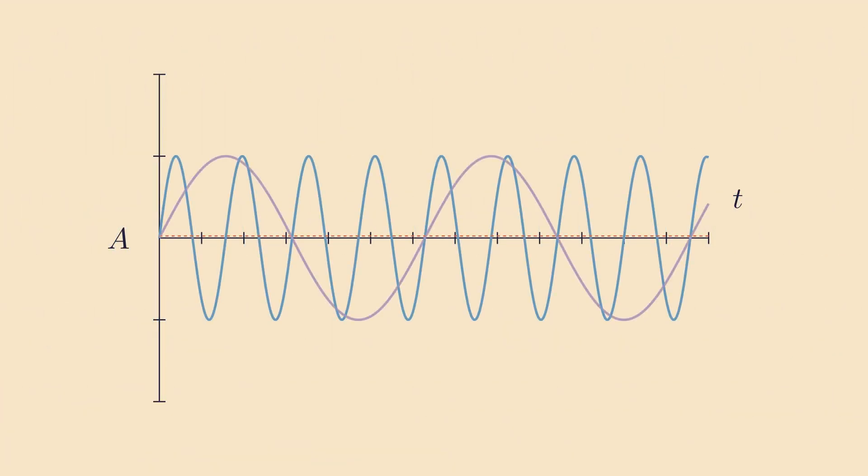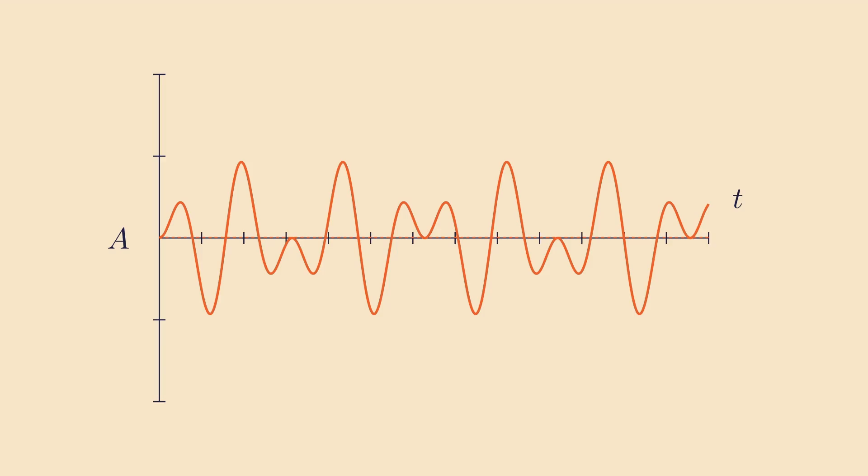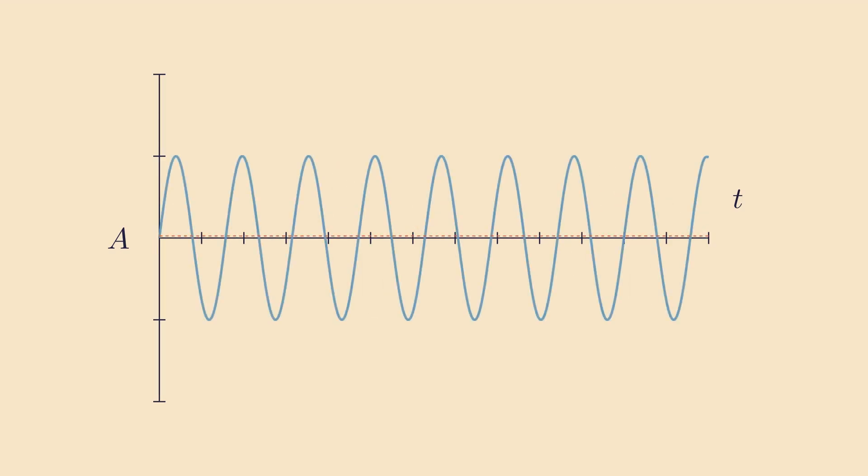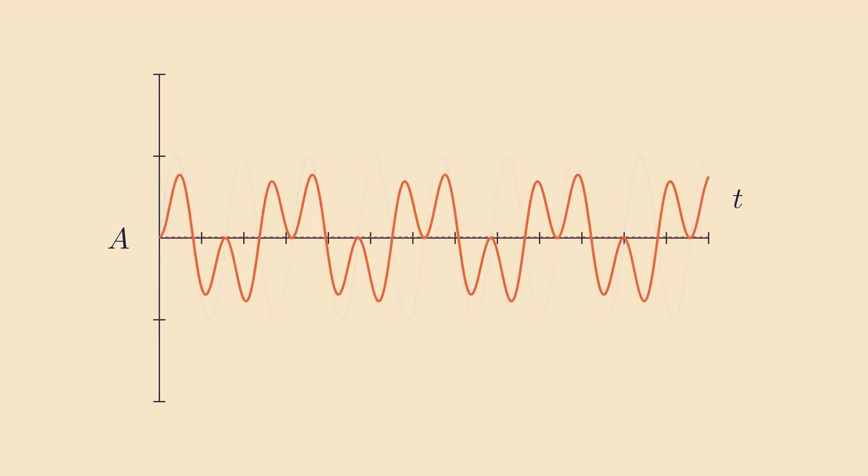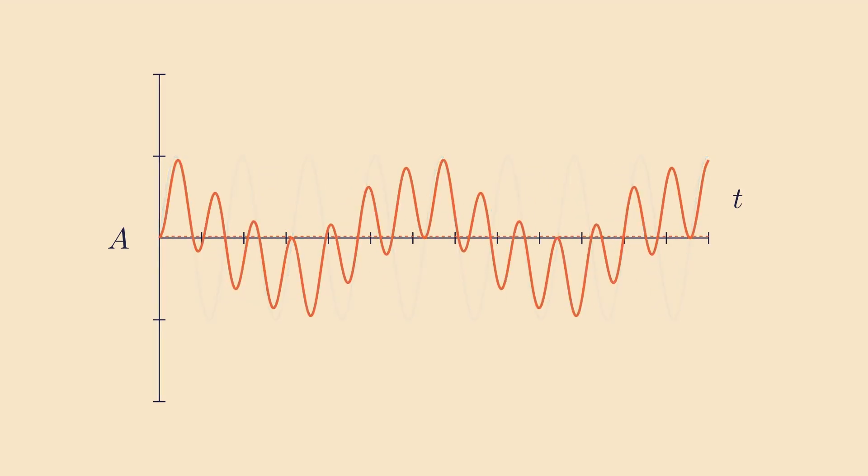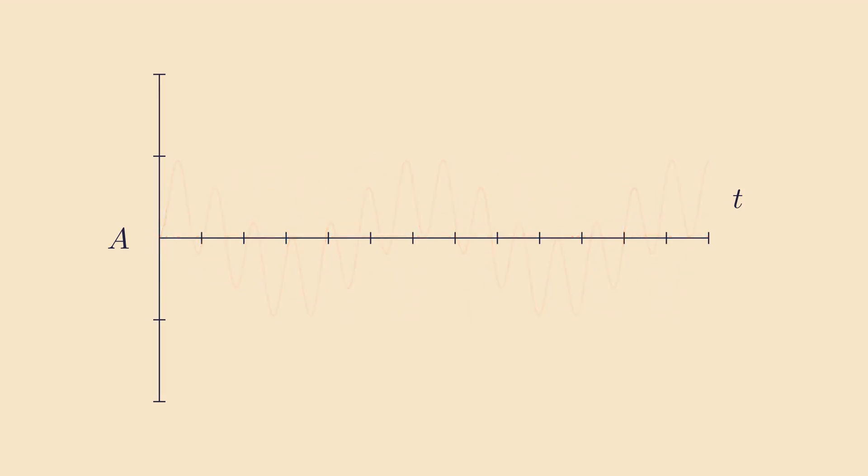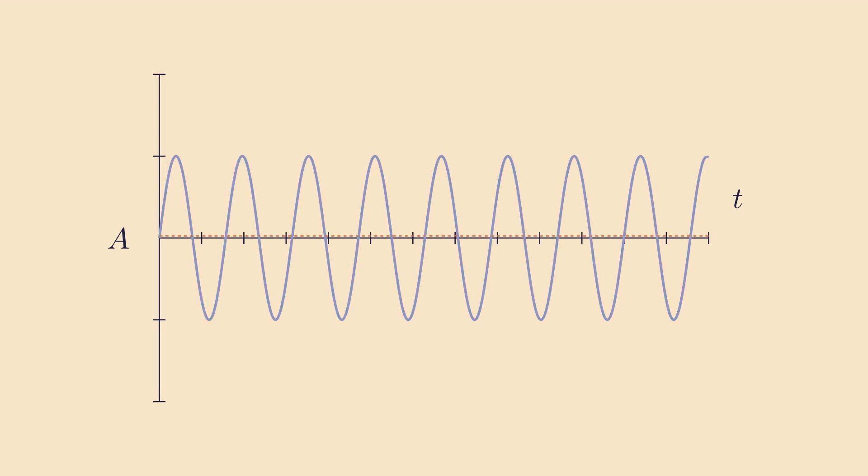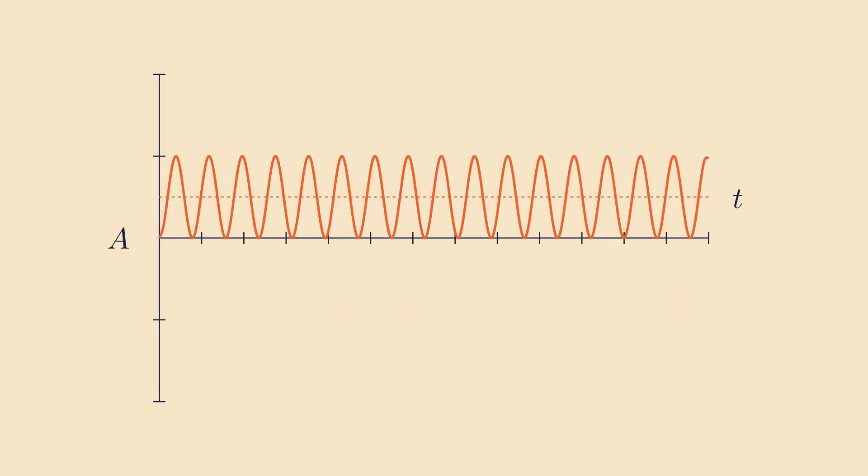How might we determine what sines describe a function? Well, let's take a look at what happens when we multiply a curve by sine waves of increasing frequencies. The blue curve is the original signal, the purple is the sine wave we're multiplying by, and the orange is the result. I've also drawn a red dotted line here to indicate where the average of the resulting signal is.